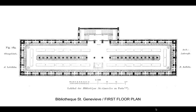This leaves the second floor — or as I have it labeled here, the first floor plan — the upper level to be free and bright and open for reading space. The shelves at the perimeter of the space have the more popular books, and then in the center you have tables for reading and seating.